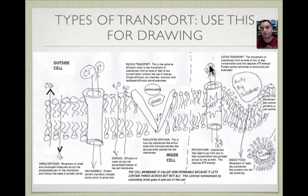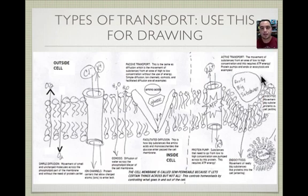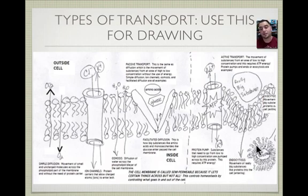For active transport on the right side, we need ATP. Protein pumps move molecules from low to high concentration using ATP. For very large molecules, endocytosis brings them into the cell. The opposite process — taking something large like a protein out of the cell — is called exocytosis.